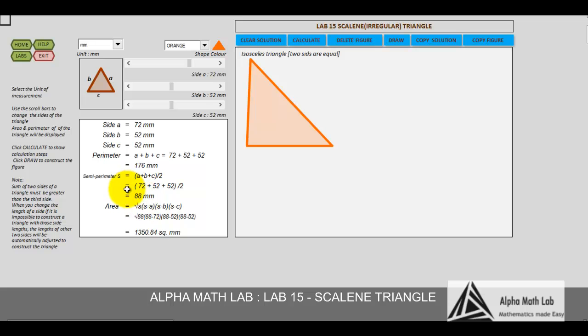Automatically the perimeter and area, semi-perimeter of the triangle changes. Let us change the unit of measurement from millimeter to centimeter. Previously it was 72 millimeter, now it is 7.2 centimeter. Side B was 52 millimeter, now it is the corresponding 5.2 centimeter. Side C was 52 millimeter, now it is 5.2 centimeter. The area is expressed in square centimeter.